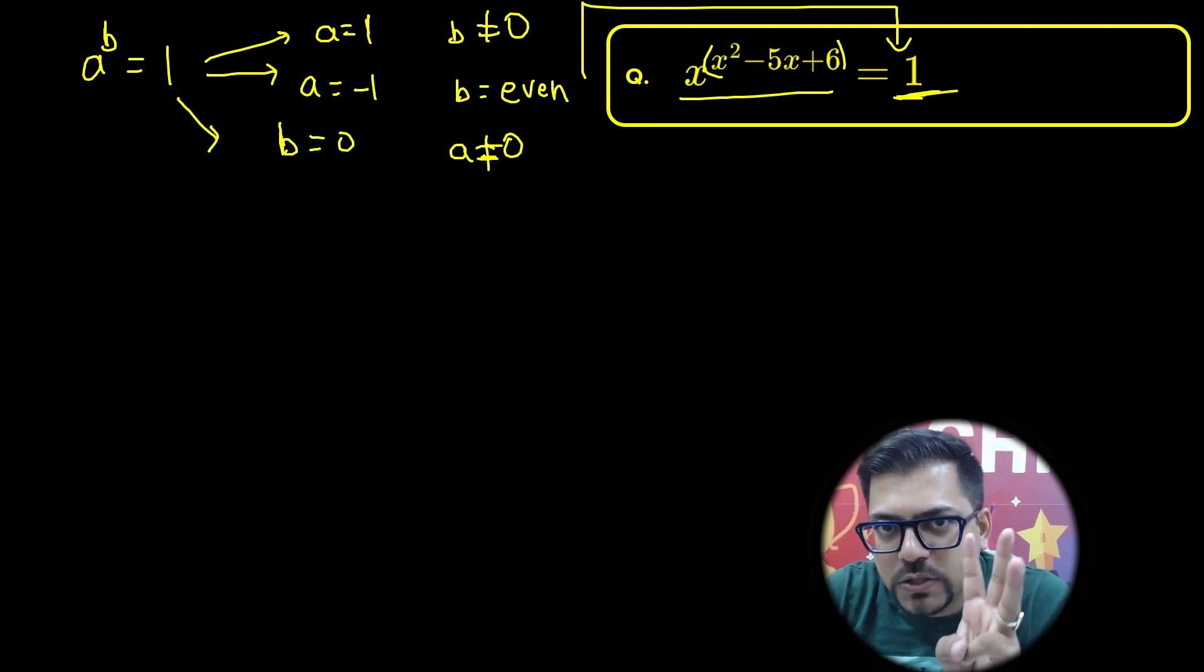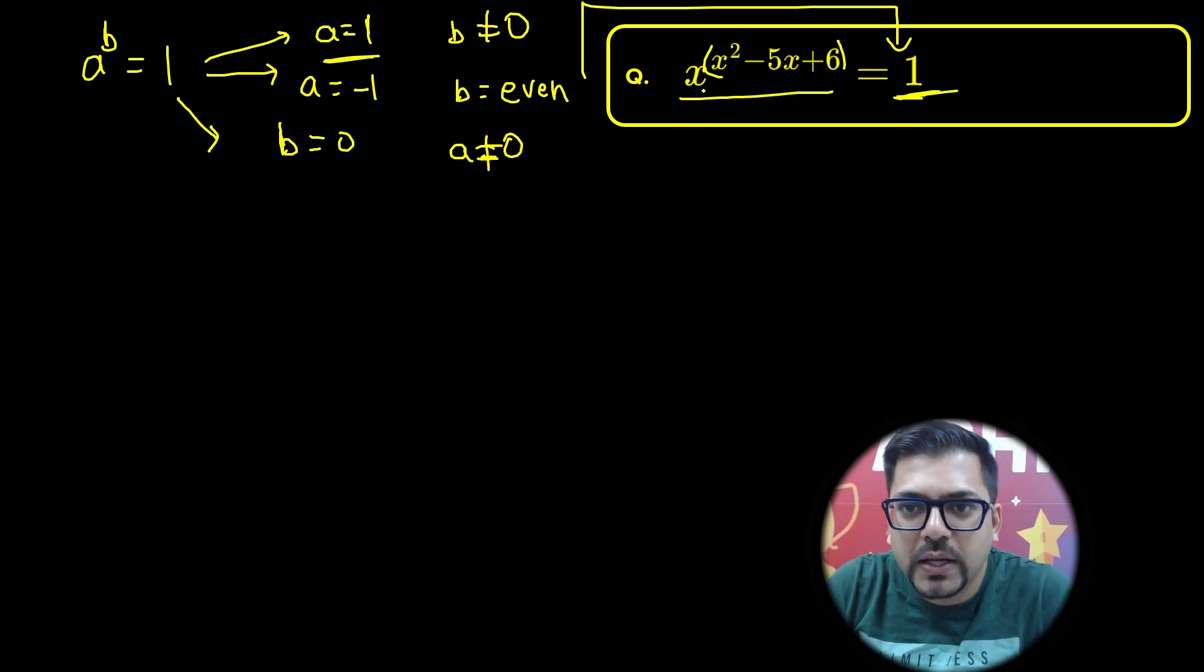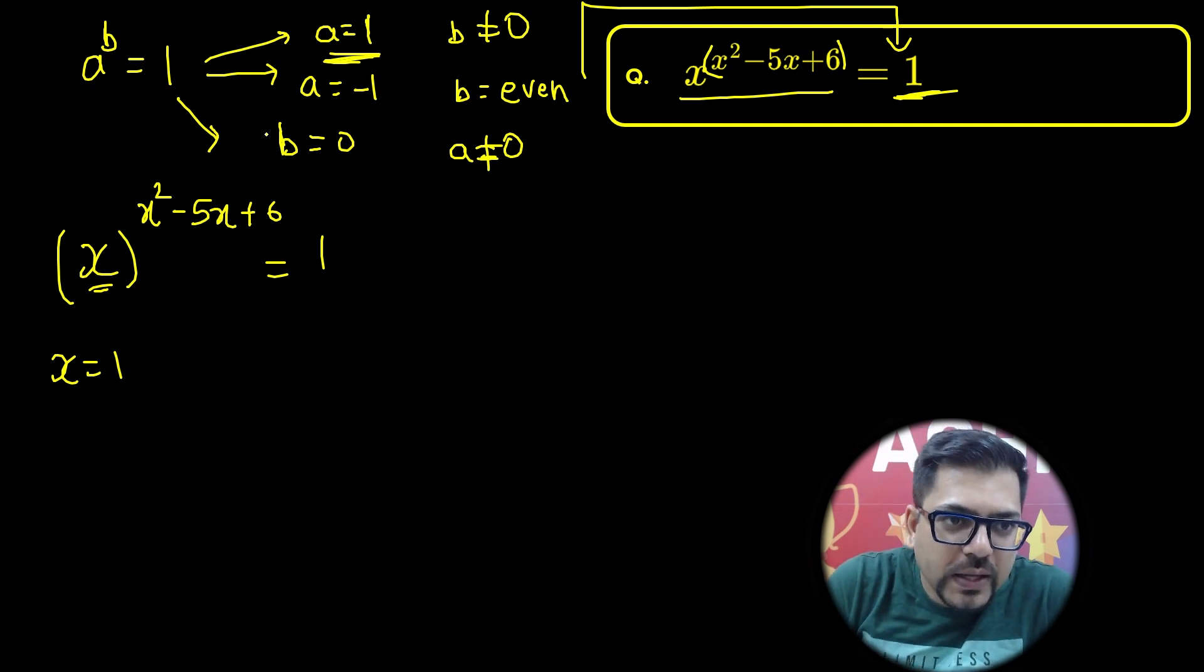You'll have to solve for all these three possibilities to get the answer. For solving the first possibility, a equals 1, we have got x raised to power x squared minus 5x plus 6 equals 1. So a equals 1 means base equals 1, which is simply x equals 1.